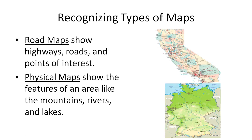And finally, physical maps. Physical maps show the features of an area like the mountains, rivers, and lakes. So this physical map — it's blue over here, which shows us an ocean. You can see the blue lines running through the green might represent rivers, and then the green shows where the land is.